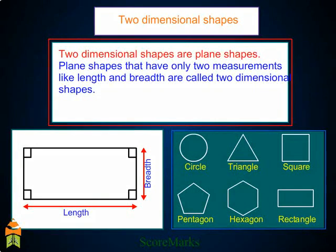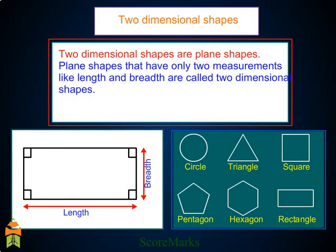Examples of two-dimensional shapes are circle, triangle, square, pentagon, hexagon, and rectangle.